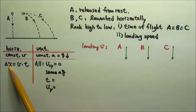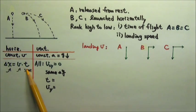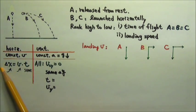On the horizontal side, the only equation we need is delta x equals v times t. For the same time of flight, the larger the delta x, the larger the horizontal velocity.